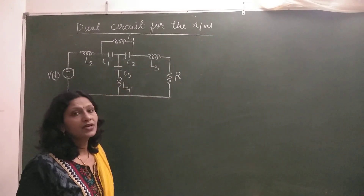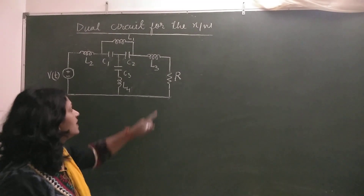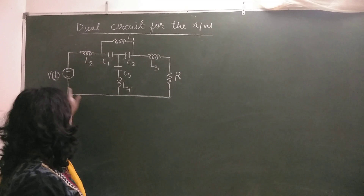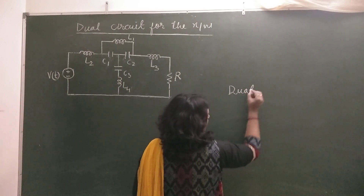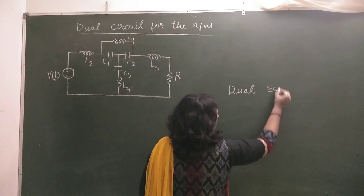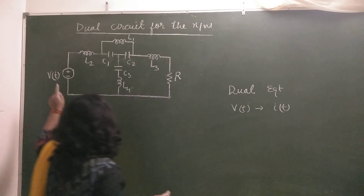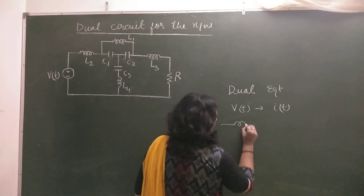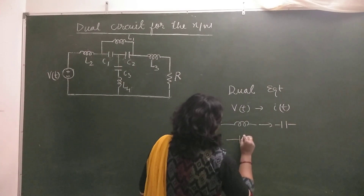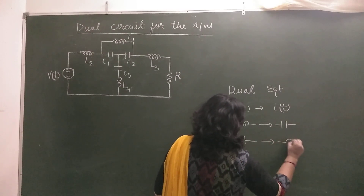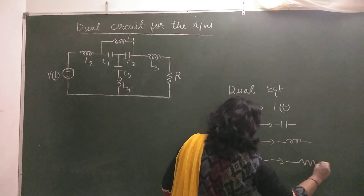To find the dual circuit of this given network, it contains all types of elements: resistance, capacitance, and inductors, and the source voltage is Vt. To find the dual of this, we have to find the dual equivalent — Vt needs to be replaced by a current source It, every inductor replaced by a capacitor, every capacitor replaced by an inductor, and resistance replaced by a conductance.